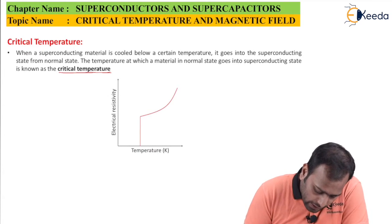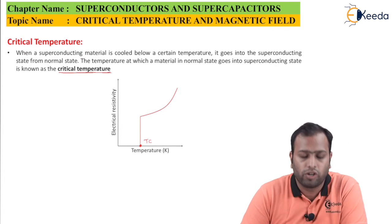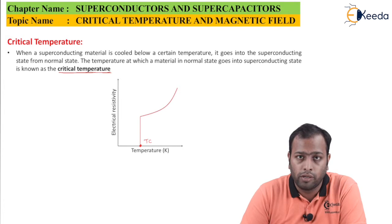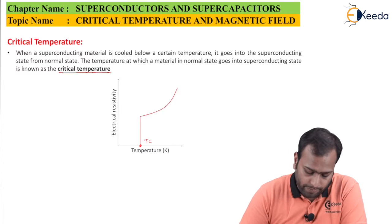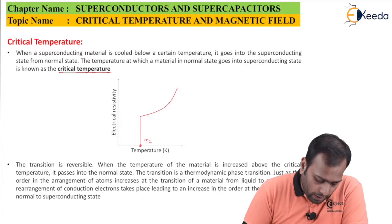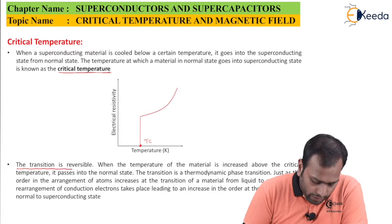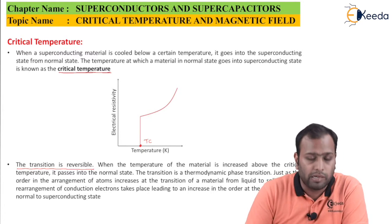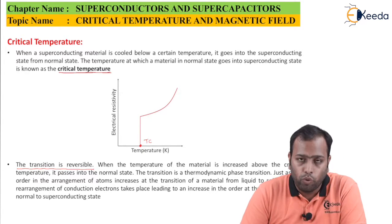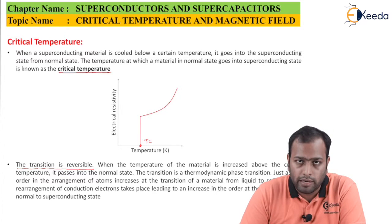Here, this is what the TC or the critical temperature or the transition temperature would be marked. The transition is reversible. This is an important point. The transition is reversible, which means that if you cool below TC, yes, your material is going to act like a superconductor, but if you warm it beyond TC, your material is going to now act like a regular or a normal conductor.